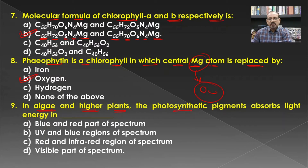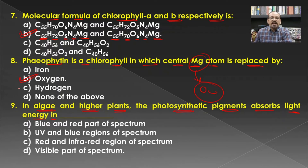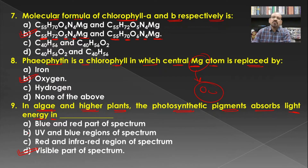In algae and higher plants, the photosynthetic pigments absorb light energy in which part of the spectrum? The green plants absorbing light for the process of photosynthesis absorb this light from the visible spectrum. Hence the visible part of the spectrum becomes the answer for this question.